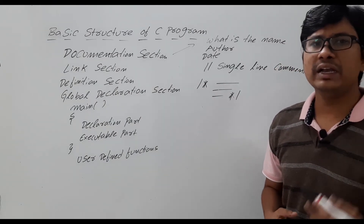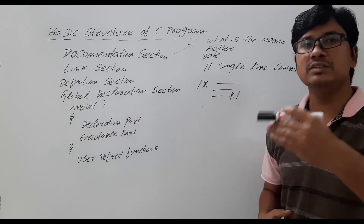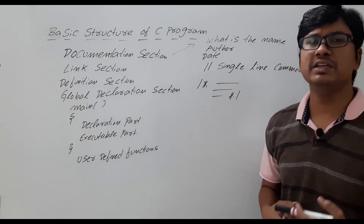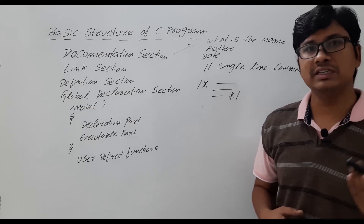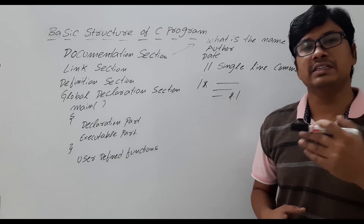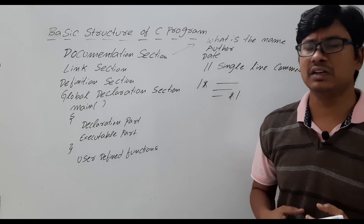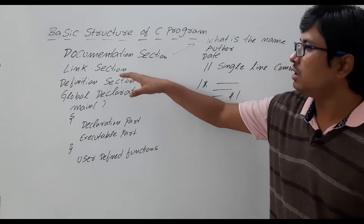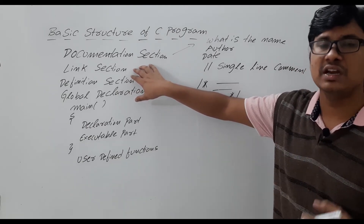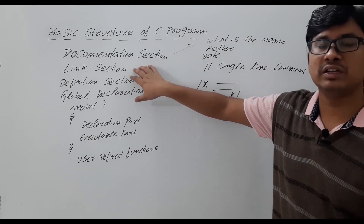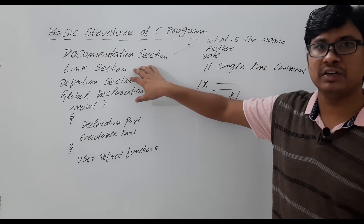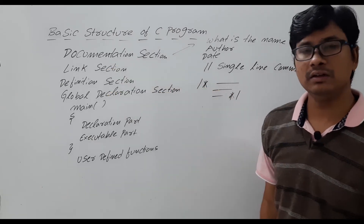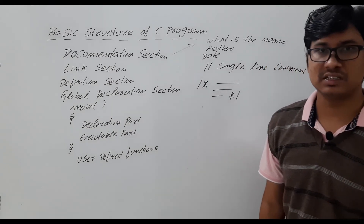Now let me discuss the link section. When I discussed the features of C, I said C is robust because it has rich inbuilt functions and operators. Various inbuilt functions such as printf, scanf, malloc, calloc, realloc, free, strlen — so many inbuilt functions are there. If you want to use those inbuilt functions, you need to use header files such as #include <stdio.h>, #include <stdlib.h>, #include <math.h>. All those header files you want to use, you write here in the link section.